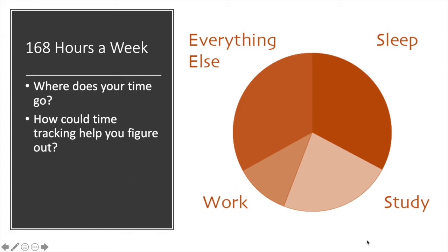One way to figure out where your time goes is to spend a week or two doing time tracking — making a log of how you're currently spending your time, so you can see what changes you might want to make to reach your ideal time budget. Every hour, just make a note of what you're doing. After the week, add up how much time you're spending in each area, then evaluate: are there areas where you're spending more time than you intend, or not as much as you'd like to achieve your goals? From there, you'll be able to see what you might want to balance out.